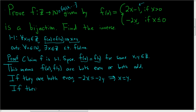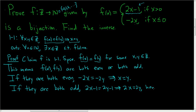If they are both odd, we still have f(x) equals f(y), but they're both odd. That means f(x) is 2x minus 1, and f(y) is 2y minus 1. We add 1 to both sides, so we get 2x equals 2y, hence x equals y. So in any case, we have that x equals y, and this shows f is 1-to-1. It is injective.